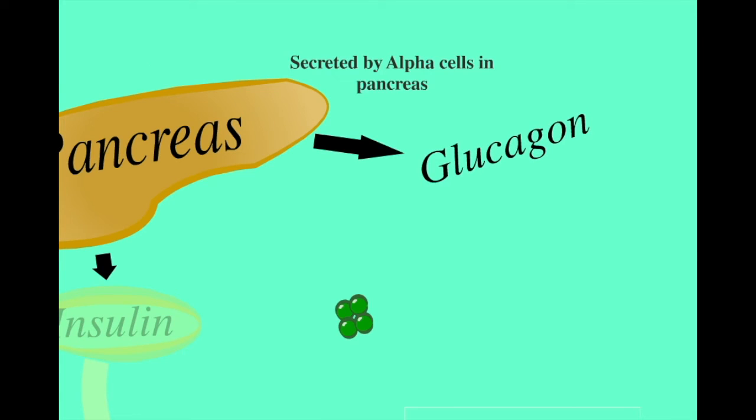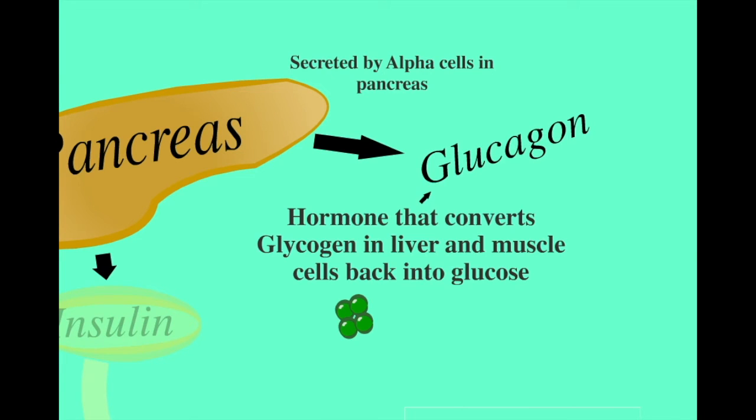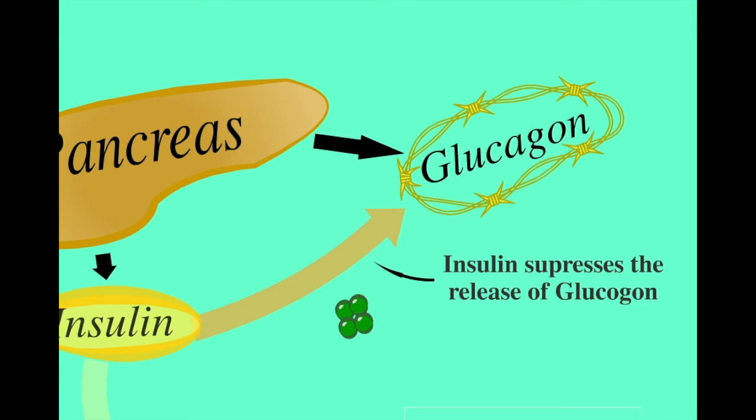The hormone glucagon, also secreted by the pancreas, is responsible for the conversion of stored glycogen in the liver and muscle back into glucose. High insulin levels suppress the release of glucagon into the blood, preventing the release of stored sugars.